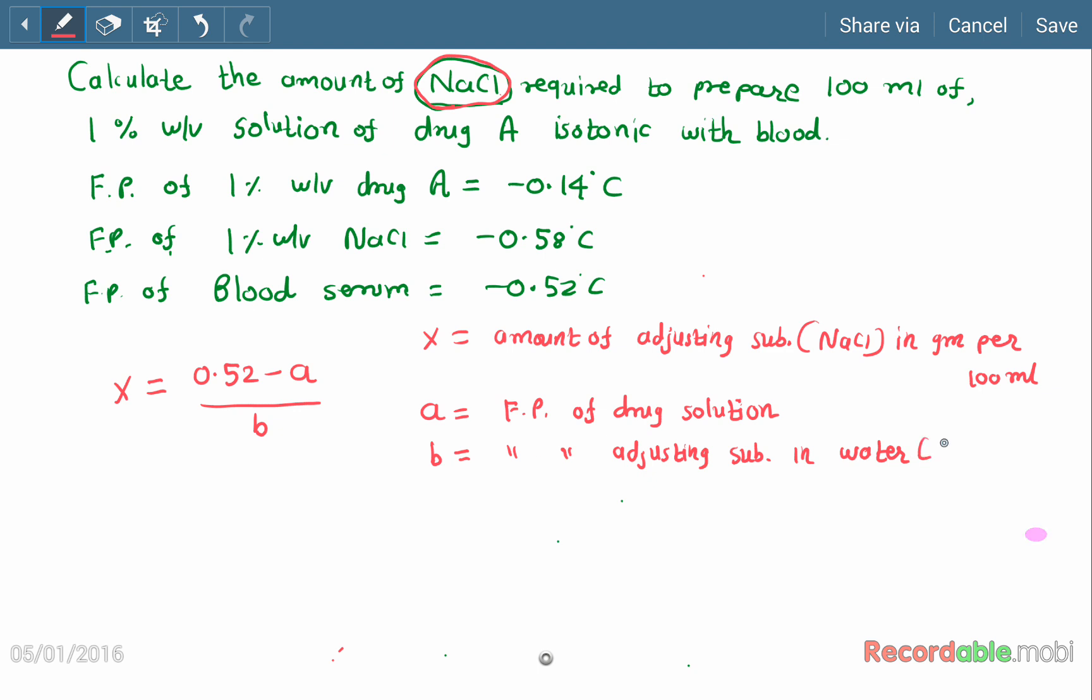Now let us put all the values in this equation: x = 0.52 - a. a means it is the freezing point of the API solution. Here the value is given for drug A solution as 0.14. Here we are omitting the minus sign.